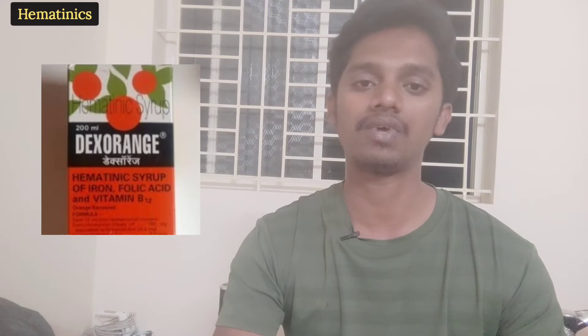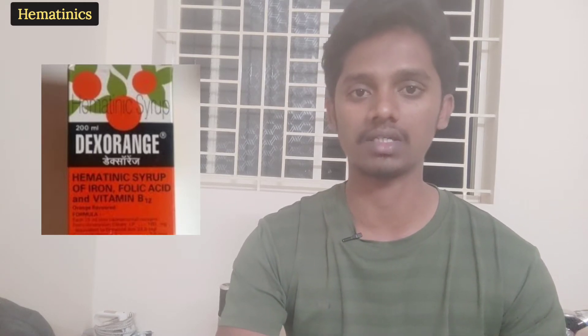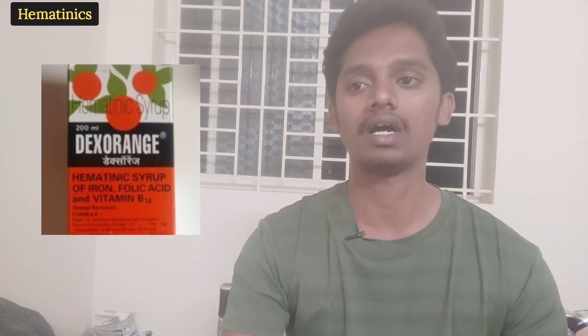Hematinics are used in the treatment or management of anemia. The three substances are iron, vitamin B12, and folic acid. We will now briefly cover the source, daily requirement, function, body distribution, and type of deficiency for each compound.